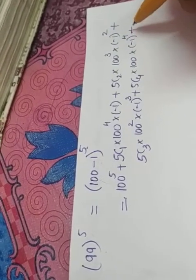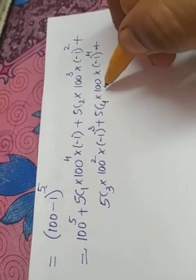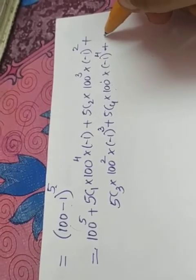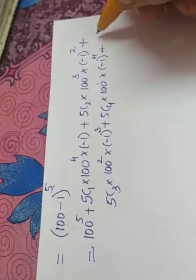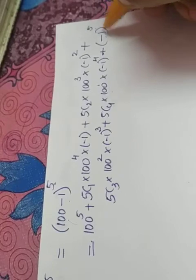The next term is 5c5 and it will be the last term. Here the power of 100 is 1, so if I am decreasing it again, it will be 100 raised to 0. Any number raised to 0 is 1, so no need to write these two values and the last term will be minus 1 raised to 5.